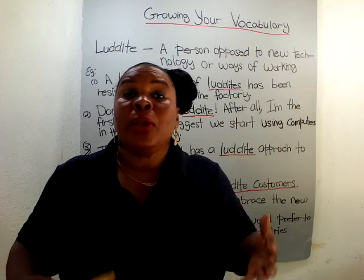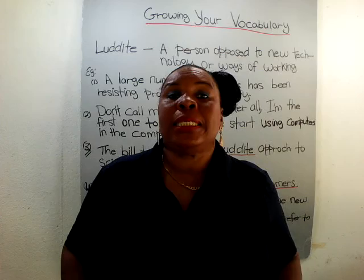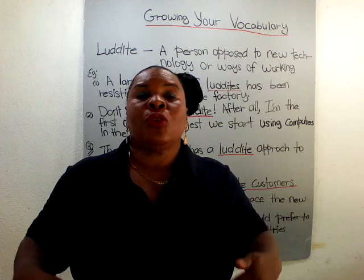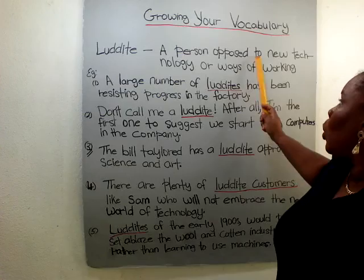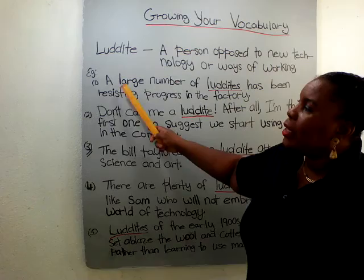Now we're going to go through some of the sentences that I have prepared so you can see how we can use the word luddite — to grasp it better in your writing or even in your understanding. Luddite: a person opposed to new technology or ways of working. So look at our first example here.